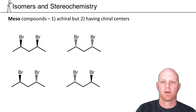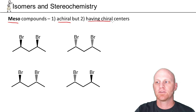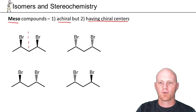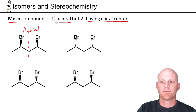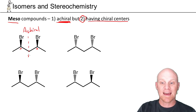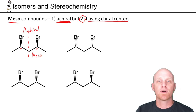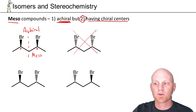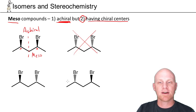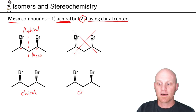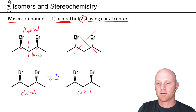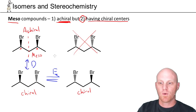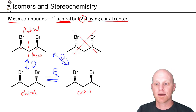That word is meso. A meso compound is achiral but has chiral centers. Any compound with one of these internal mirror planes is achiral, but that's only the first part of the definition. The second part is equally important: it has to have chiral centers. This molecule has two chiral centers, and having two chiral centers but being achiral is what makes it meso. Every meso compound is achiral, but not all achiral compounds are meso. Being achiral, this compound and its mirror image are identical — so we cross the fourth one out and only have three stereoisomers.